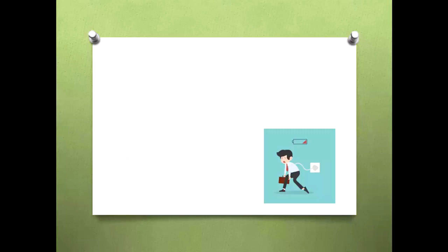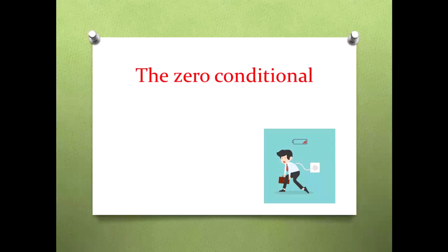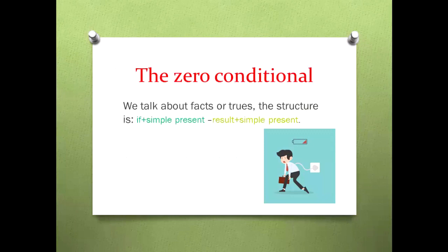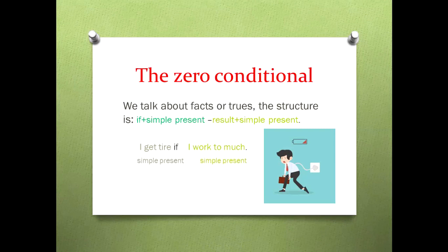Here we can see a man — he's a worker and he is very, very tired. We are going to use the conditional zero. The definition is: zero conditionals are facts or truths. The structure uses 'if' with simple present. For example: 'I get tired if I work too much,' or 'I get tired if I do a lot of homework.' We have two sentences in simple present — 'I get tired' and 'I work too much' — both simple present.